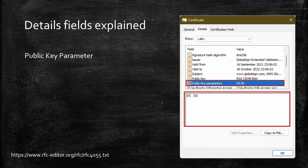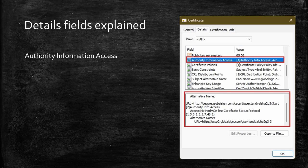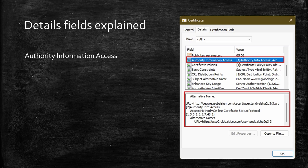Authority Information Access gives information on how to get the issuer certificate. It should have a link from where the issuer certificate can be downloaded. It also has a link to OCSP from where the status of a certificate can be verified. Like in this image, you can clearly see there's a URL http://secure.globalsign.com/cacert for the issuing CA certificate. So if you want, you could use that link to directly download that certificate. And down below, we have the link for OCSP — http://ocsp2.globalsign.com will be used to verify the status of this certificate.